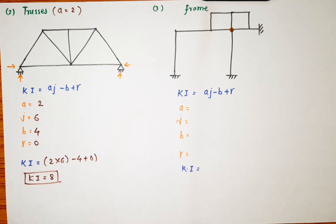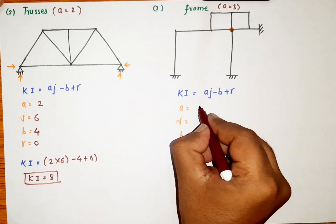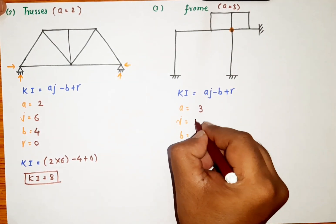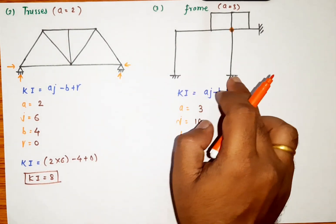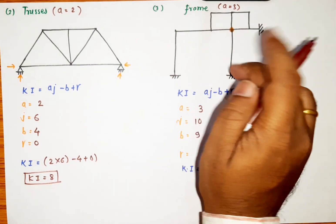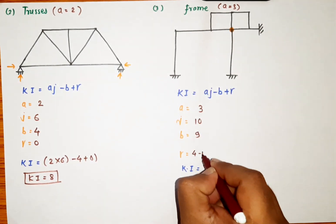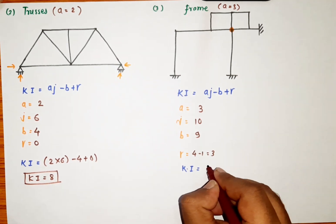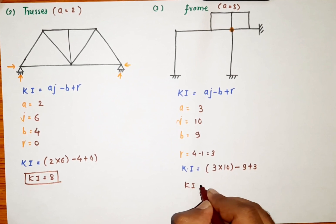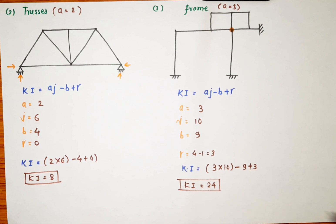Let us consider the next problem, which is a frame. For a frame, there are three degrees of freedom at each joint — delta x, delta y, and theta xy — so a = 3. The number of joints j = 10. Reactions: 3 + 3 + 3 = 9, so b = 9. There is one internal hinge with four members meeting, giving γ = 4 − 1 = 3. Therefore kinematic indeterminacy = 3 × 10 − 9 + 3 = 30 − 9 + 3 = 24. Using these basic formulas, we can calculate kinematic indeterminacy for any structure. Thank you.